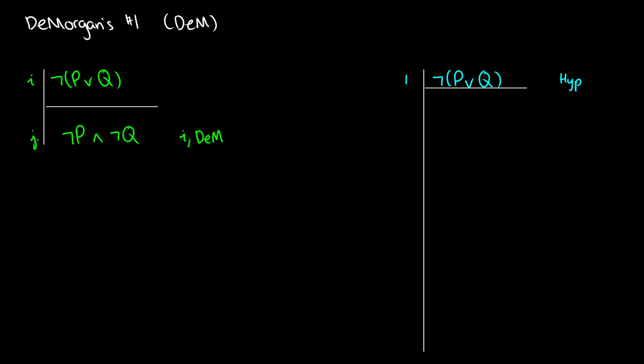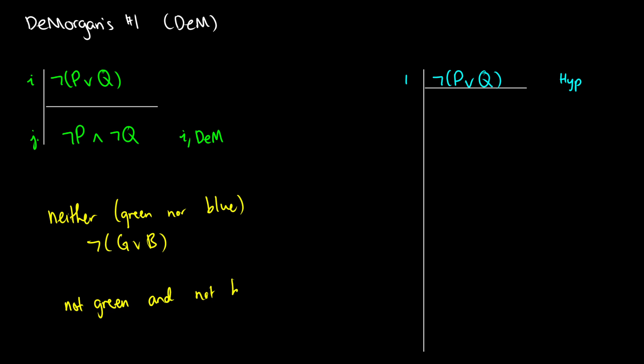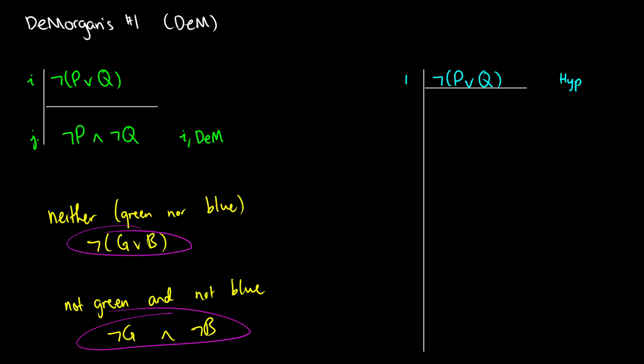Now the last two we're going to do are De Morgan's laws — just one of the two different types. This one says if we have not (p or q), we get not p and not q. In English, you can say something like 'neither green nor blue' — this is like saying not (g or b). We can paraphrase this as not g and not b. These two are logically equivalent by translation and by truth conditions. So we're doing not (p or q) to not p and not q on this slide, and the reverse on the next slide, so we can substitute these with each other at any time.